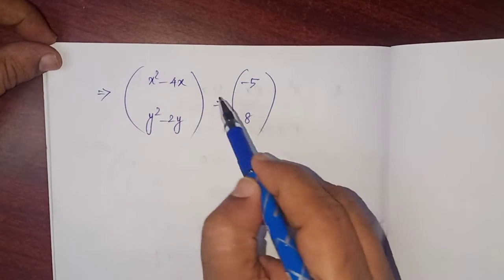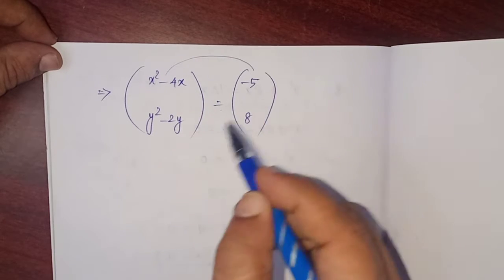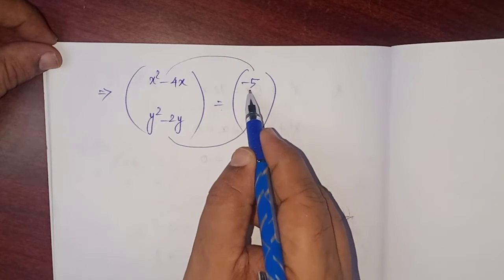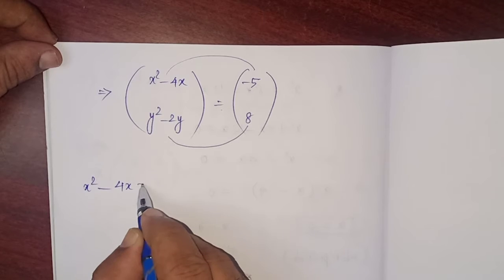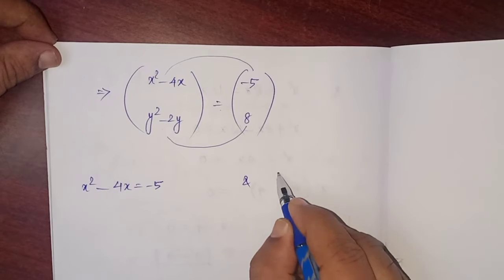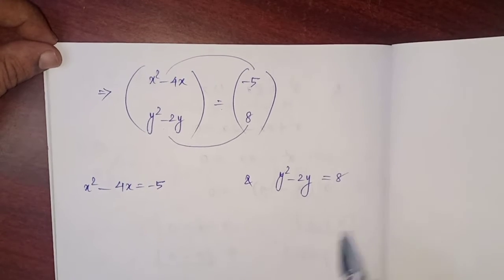Now here equals, so you can equate the corresponding elements. x squared minus 4x equals minus 5, and y squared minus 2y, that is equal to 8.